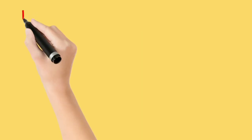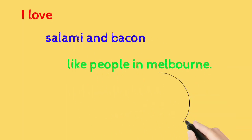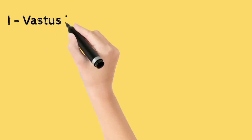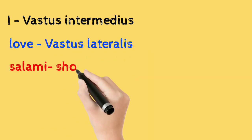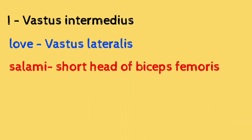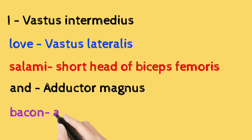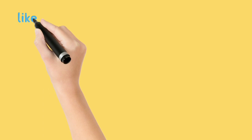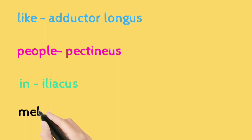Now let's see the mnemonic to remember all these muscles: 'I love salami and bacon like people in Melbourne.' I = vastus intermedius, Love = vastus lateralis, Salami = short head of biceps femoris, And = adductor magnus, Bacon = adductor brevis, Like = adductor longus, People = pectineus, In = iliacus, Melbourne = vastus medialis.